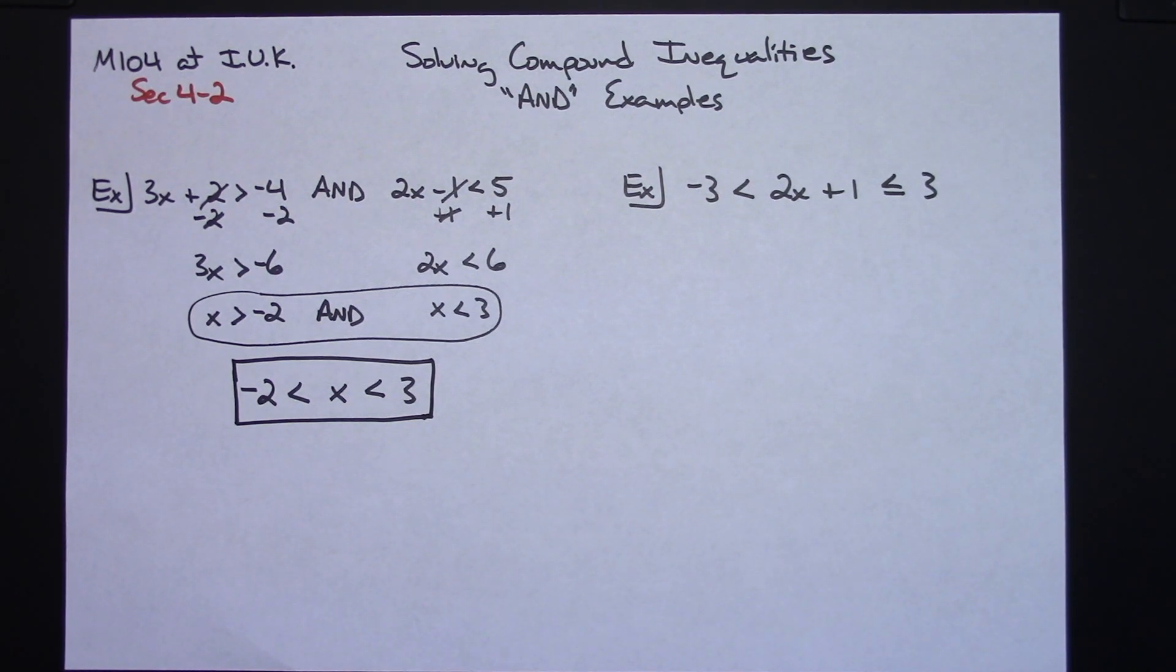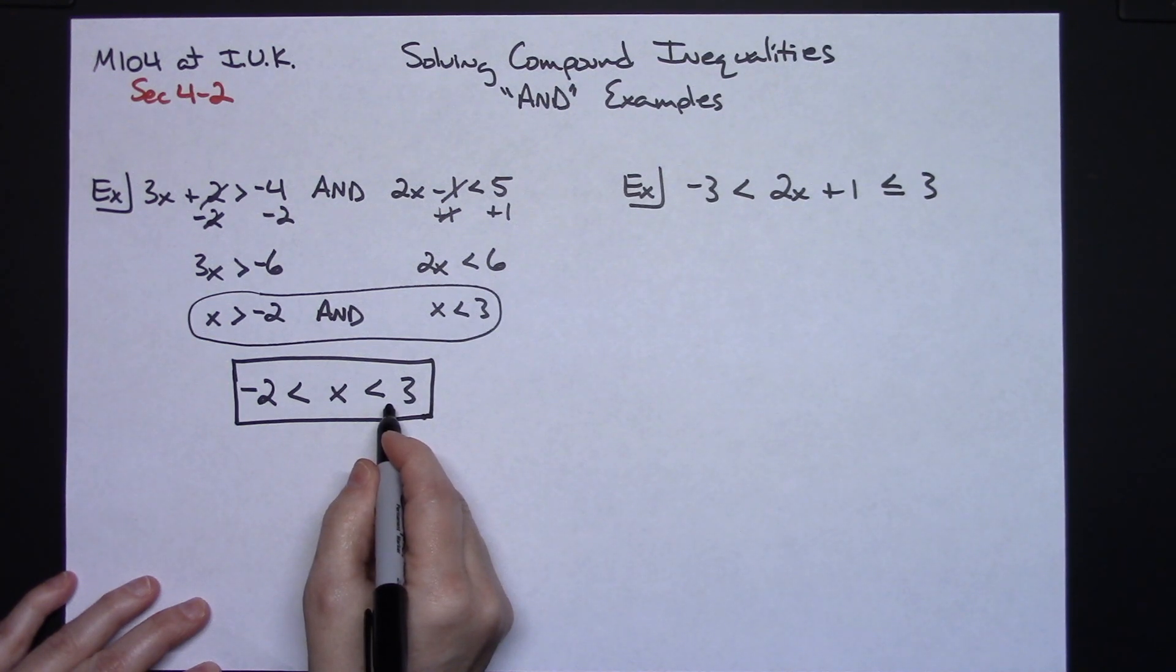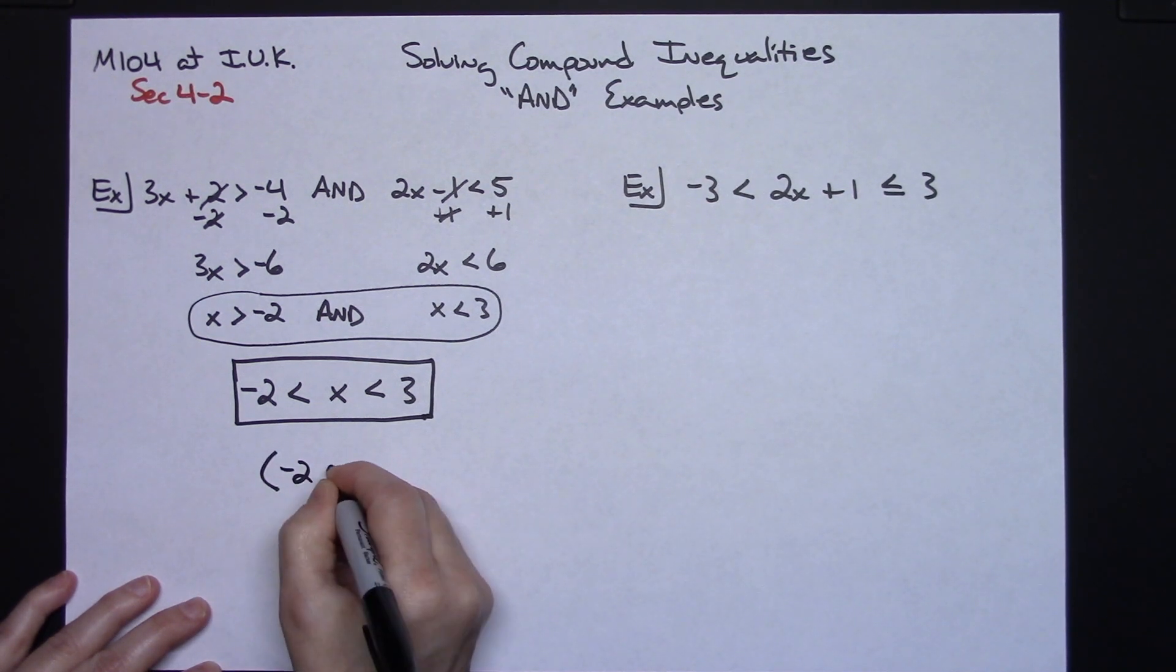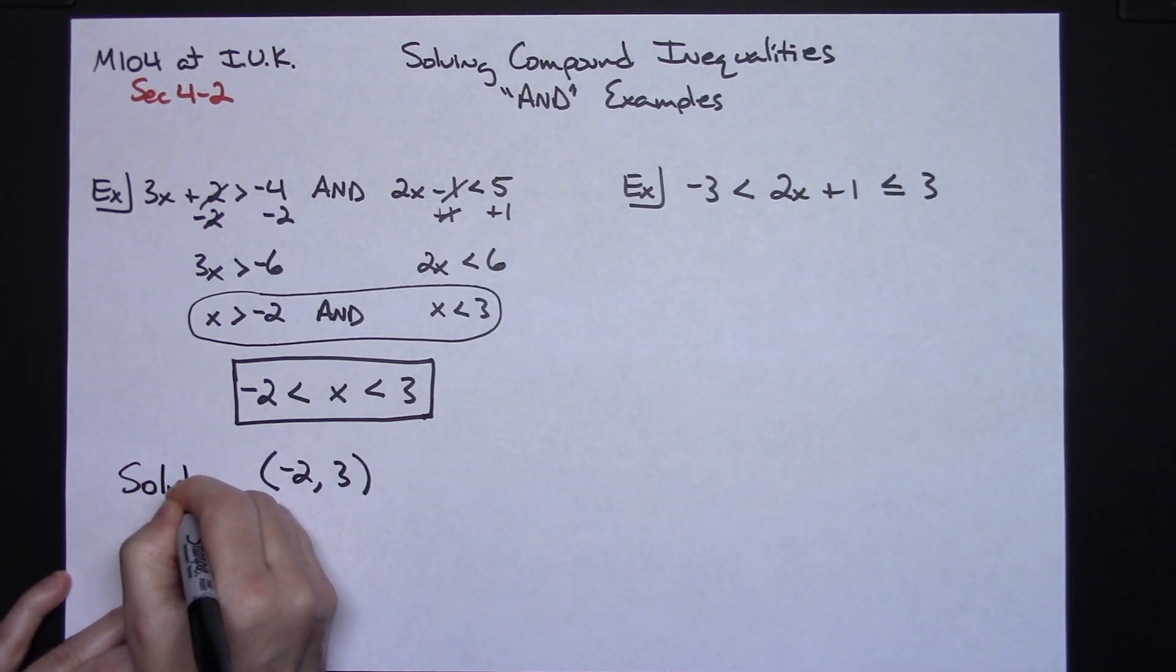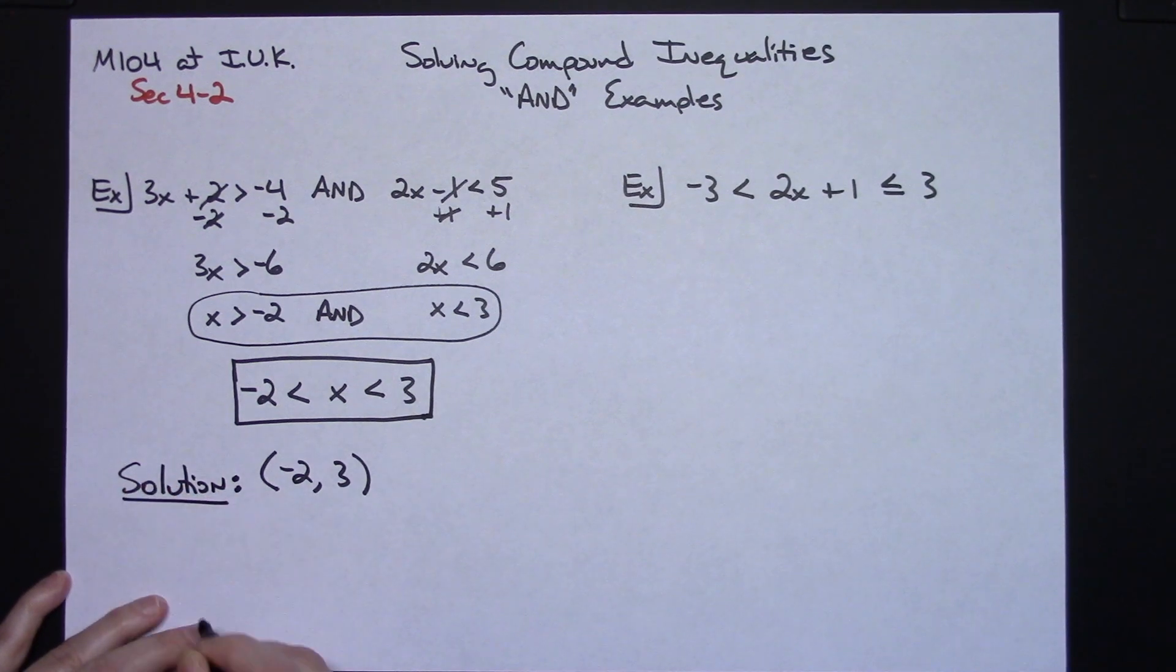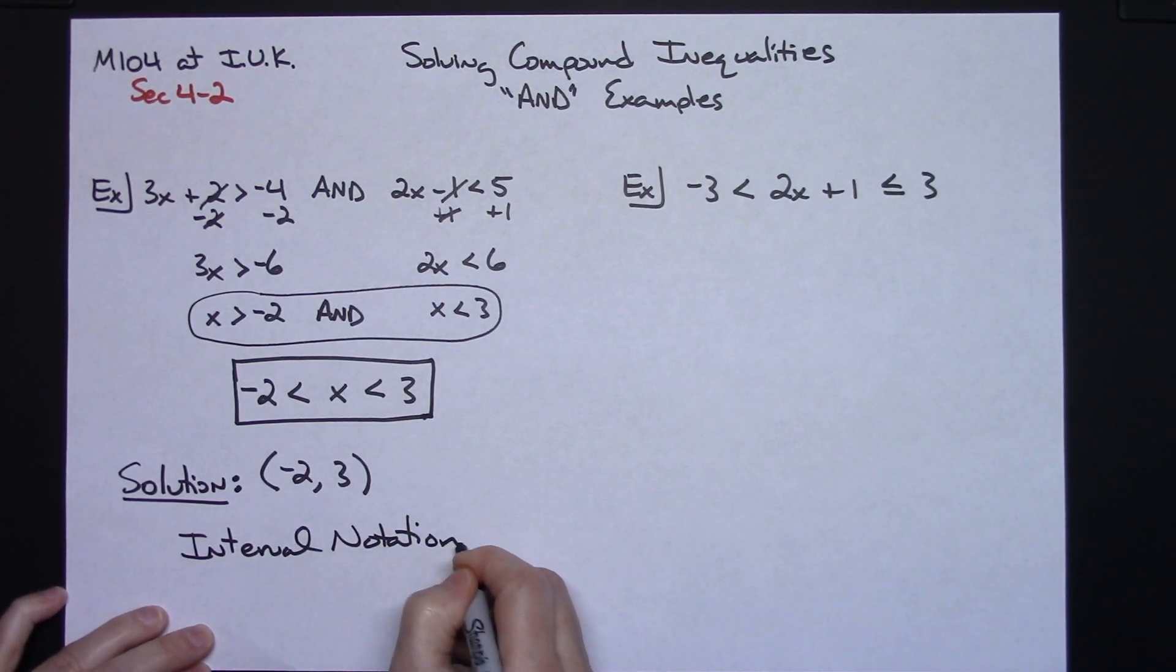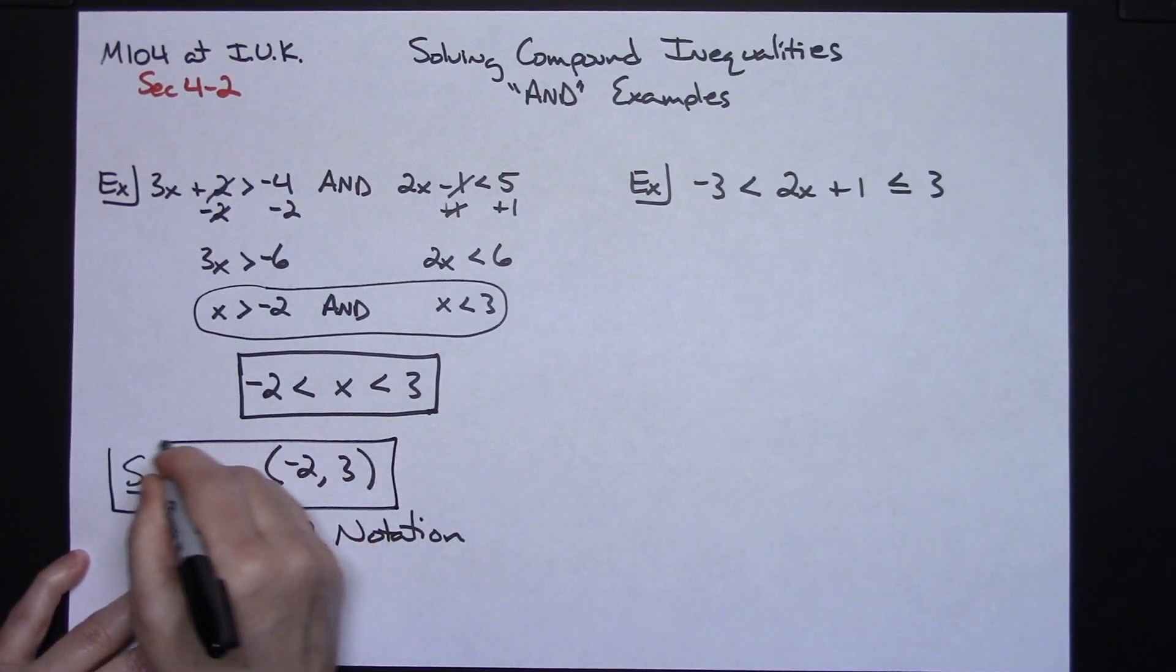And if you were going to then use interval notation, these are both less than symbols, which means that negative 2 and 3 are not going to be part of the solution. So I'm going to have curvy bracket negative 2 to 3 curvy bracket. So this is your solution in interval notation. So different ways to put your answer depending on what class you are in.